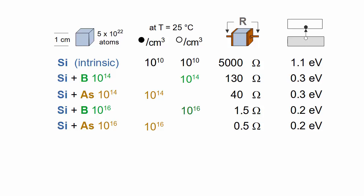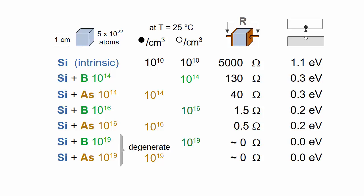When the dopant concentration exceeds 10 to the 19, which is about 1 per 1,000 silicon atoms, the material conducts so well it behaves like a metal and the semiconductor is said to be degenerate. In integrated circuits, strongly doped degenerate silicon is used to make MOS gates and short electrical connections.